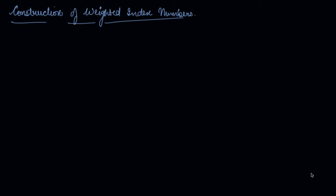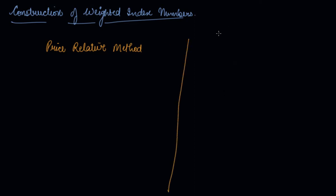In this video, we will be studying the methods of constructing the weighted index number. In the simple index number, we have two methods: the simple aggregated method and the price-relative method. In the weighted index number also, there are two methods. Number one is the weighted index price-relative method, and the other one is the weighted aggregated method.